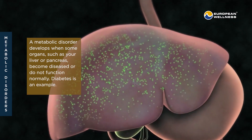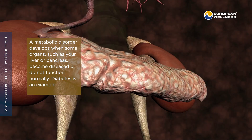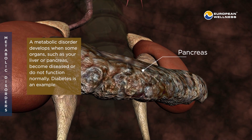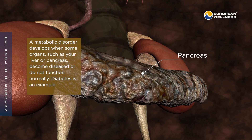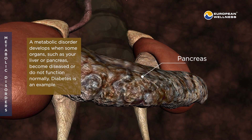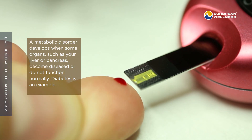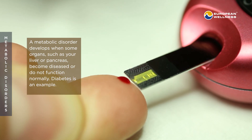A metabolic disorder develops when some organs, such as your liver or pancreas, become diseased or do not function normally. Diabetes is an example.